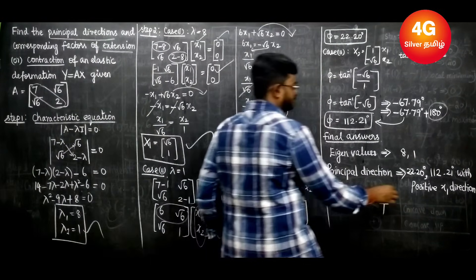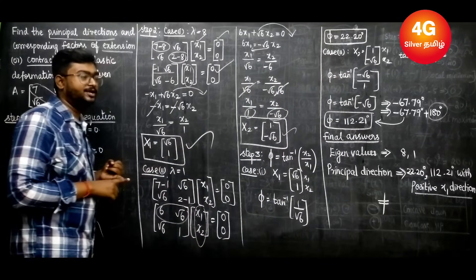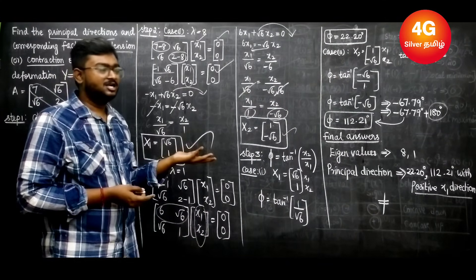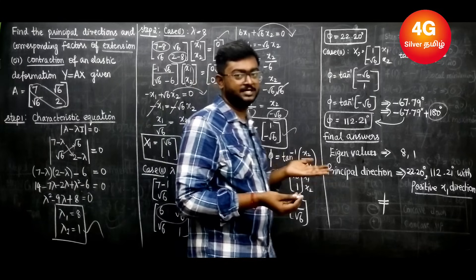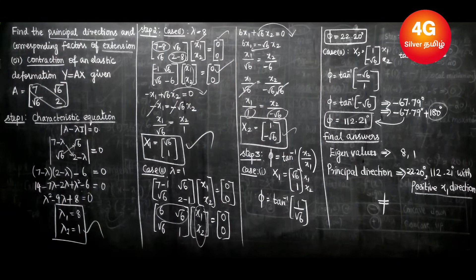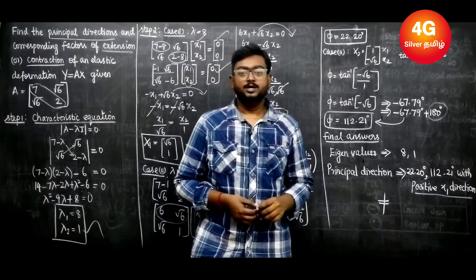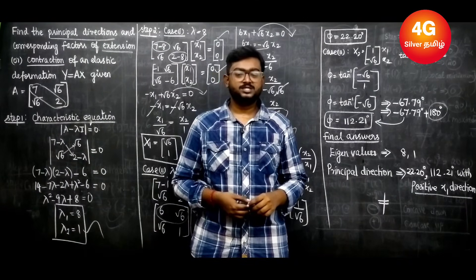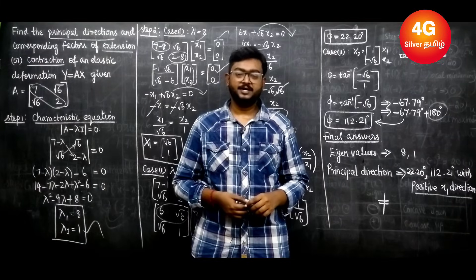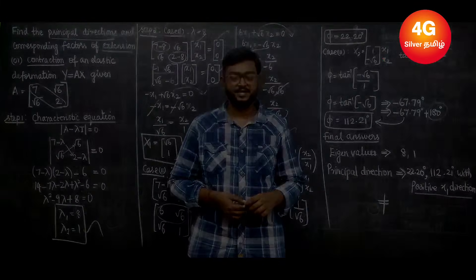This completes the question. The final answer: eigenvalues are λ = 1 and λ = 8. The principal directions are at angles 22.20 degrees and 112.21 degrees with the positive x1 direction. This is very simple. 4G Silver Academy — Strength, Success, Clarity. Vanakkam.